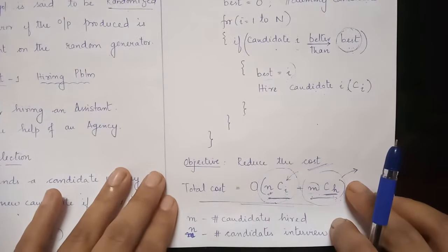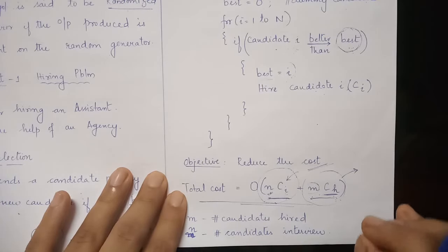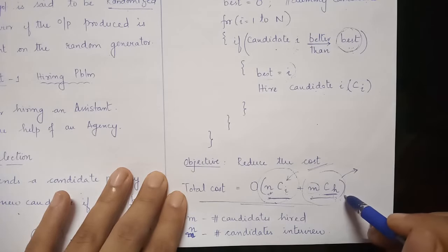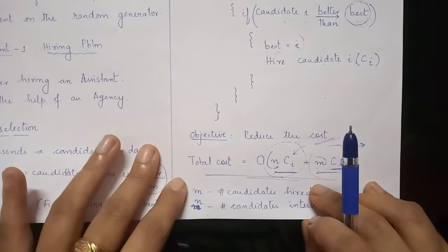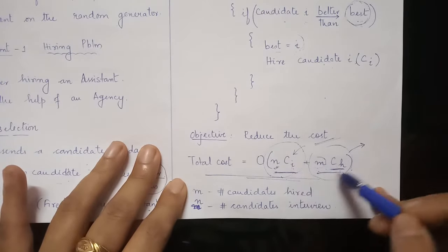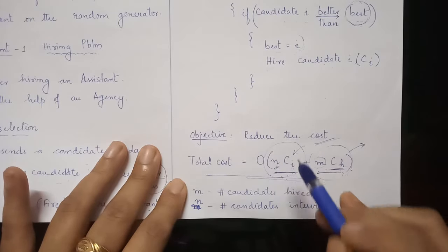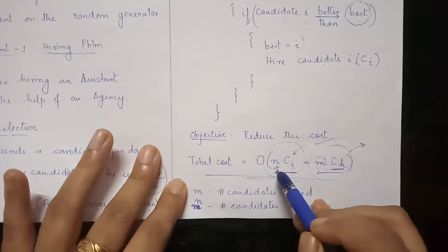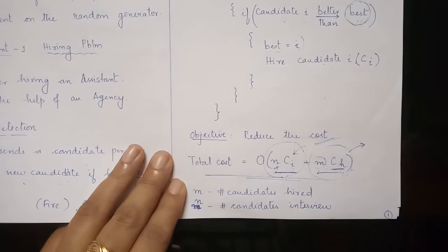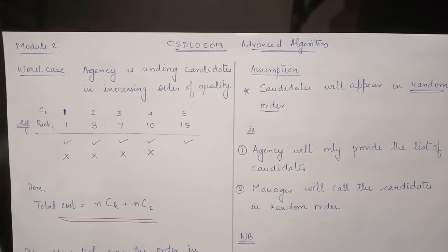Now, what is the objective of this problem statement? The objective is to reduce the cost associated with hiring and firing. The total cost can be divided into two parts: there is a cost associated with interviewing, and by default we need to interview n candidates sent by the agency. After interviewing, some m candidates will be hired. Here, ci represents the cost of interviewing and ch represents the cost of hiring.